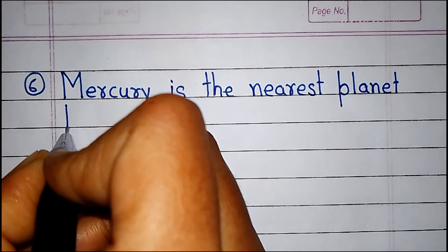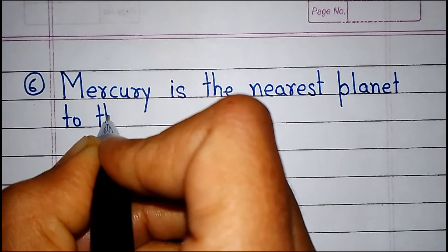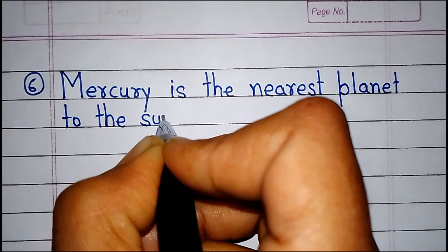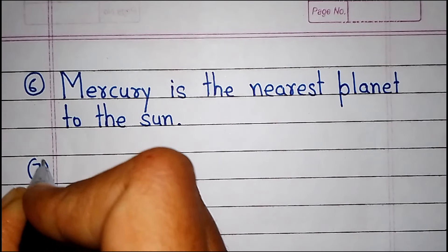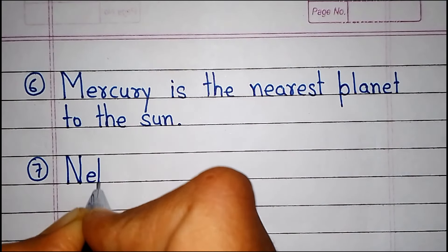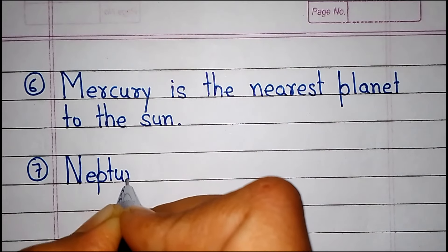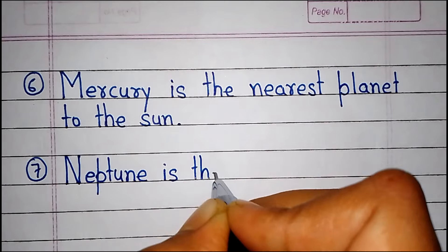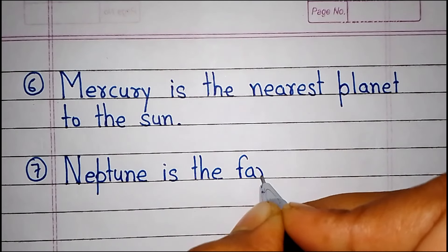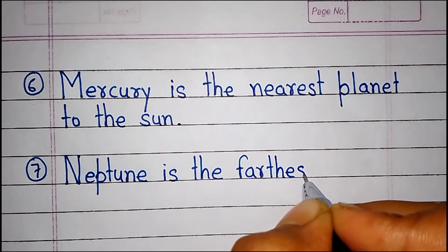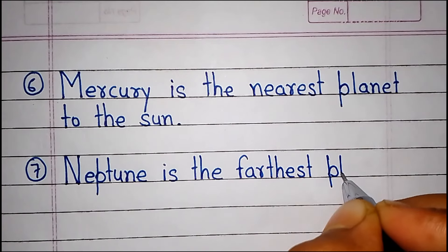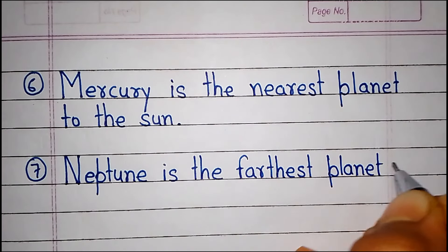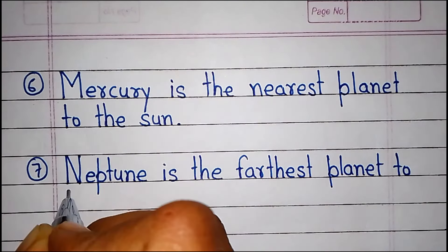Mercury is the nearest planet to the sun. Neptune is the farthest planet to the sun.